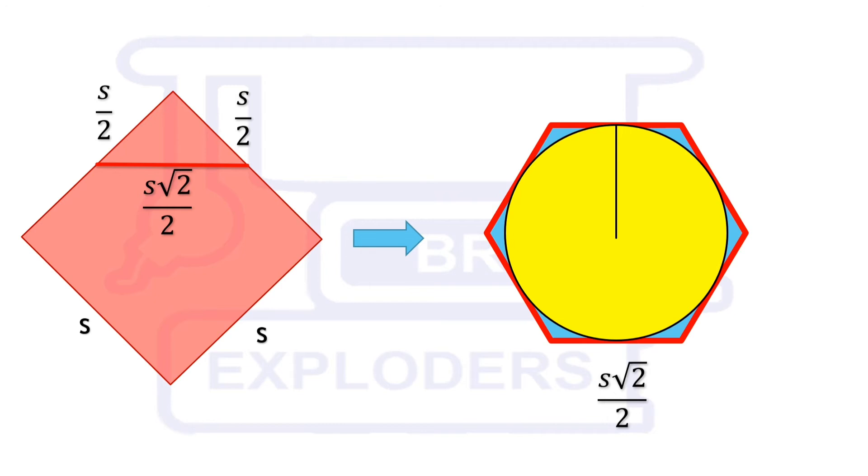Drop a perpendicular from the center of the circle to any one of the sides. Also, join center with any one vertex of that side. Angle between these two line segments is 30 degrees with the help of which we can calculate the radius of this circle.